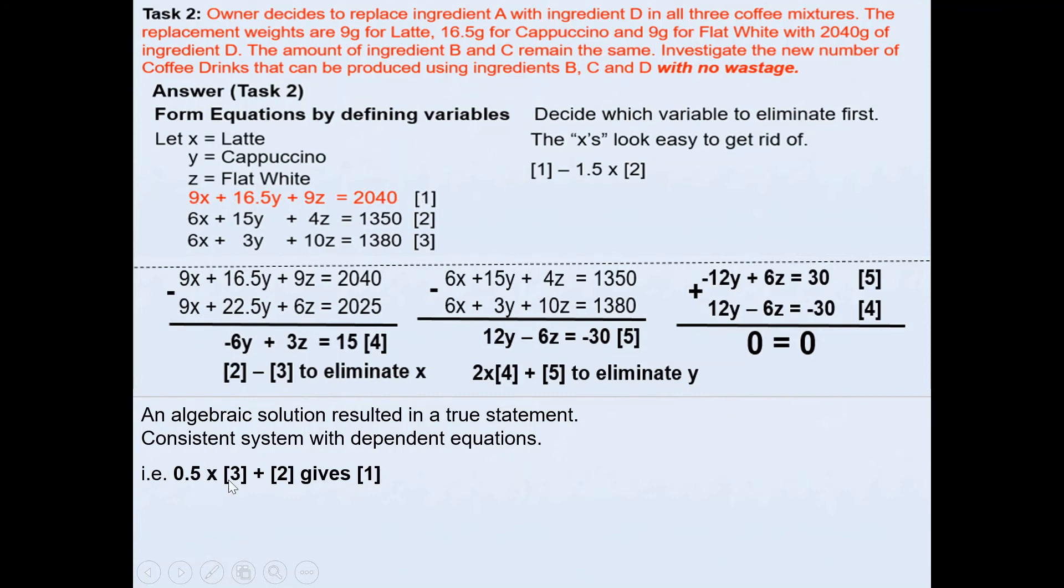For example, 0.5 times 6 gives me 3, and 3 + 6 will give me 9. Likewise, 0.5 times 3 is 1.5, so 1.5 + 15 is 16.5. And half of 10 is 5, 5 + 4 is 9. Likewise, 0.5 times 1380, if I add that to 1350, this will give me 2040. So this means it's a consistent system with dependent equations.